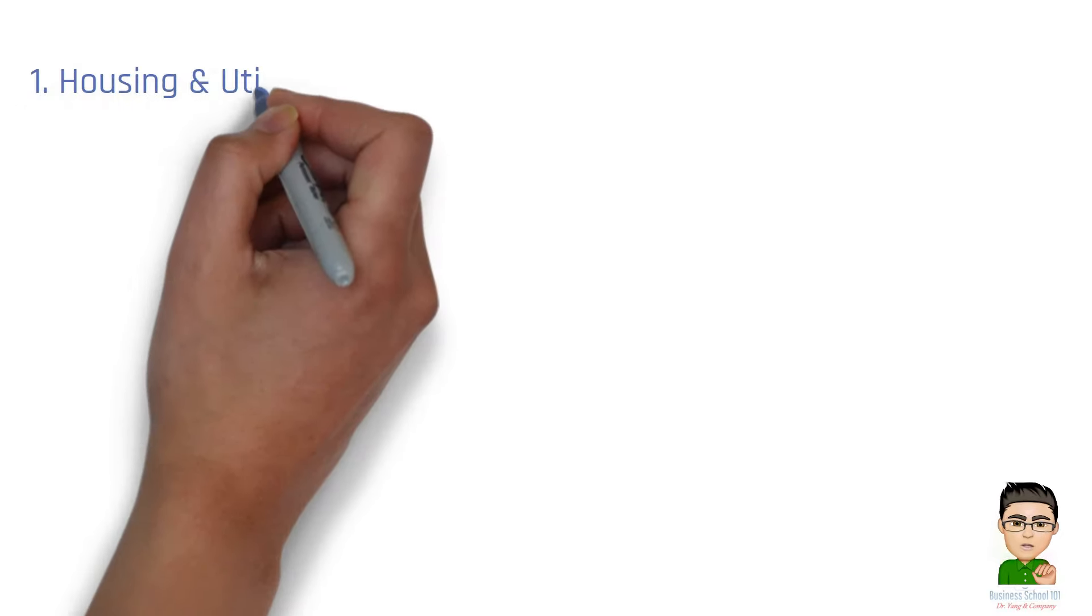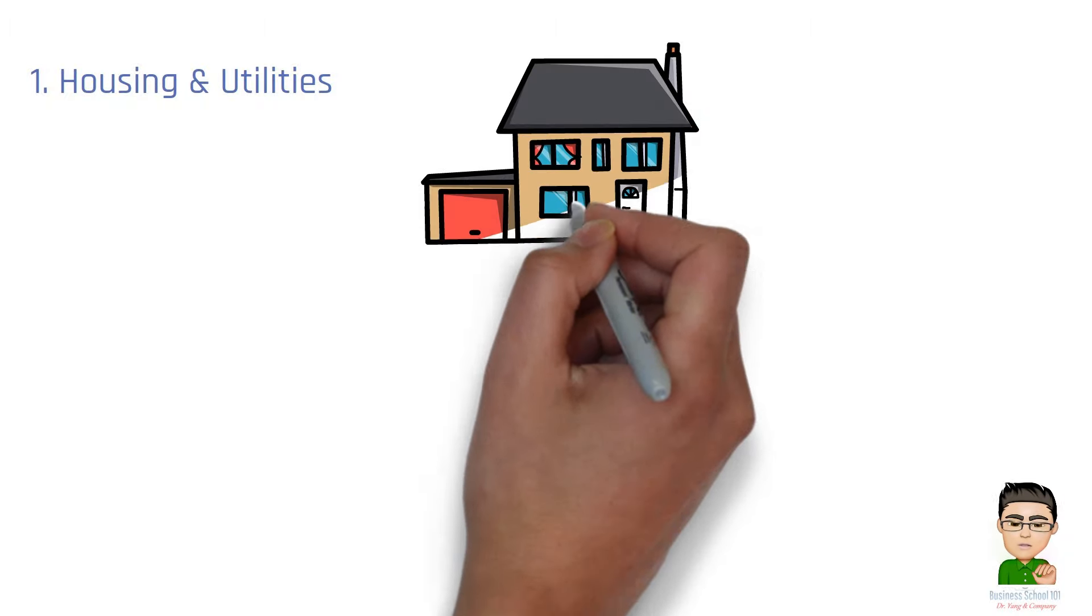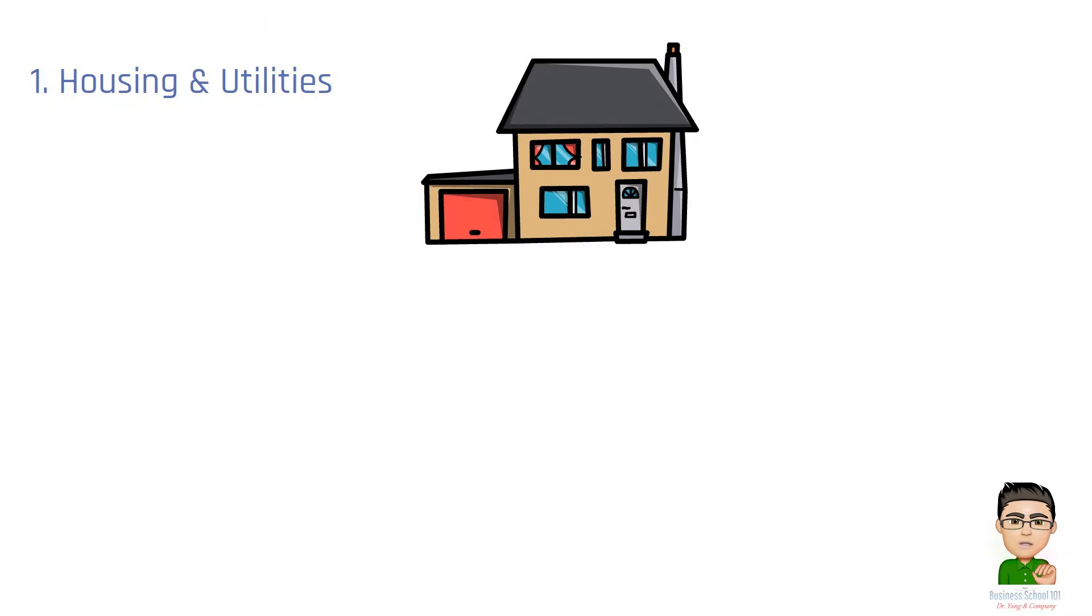Number 1. Housing and Utilities. It includes rent, housing maintenance, water, electricity, and other utilities. This is a heavily weighted category as shelter is a basic necessity.